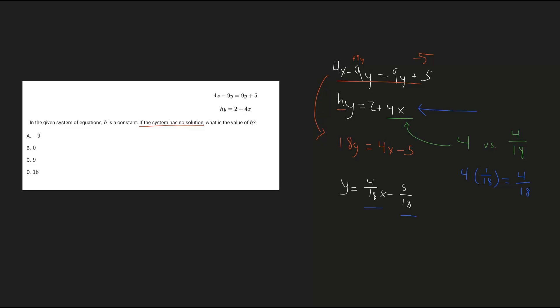So let's say h was 18, then 4 would be divided by 18 when you isolate for y. So I'll show you how this works.